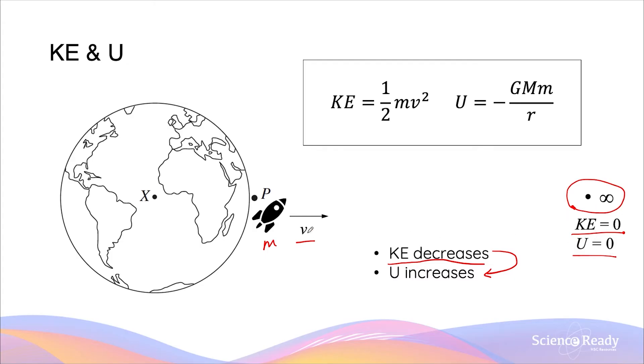You can imagine, if the velocity is not fast enough, the rocket will come to a stop or brake with a velocity of zero before it can reach this point of infinity.